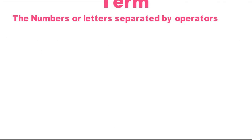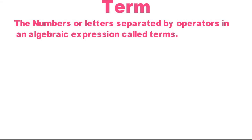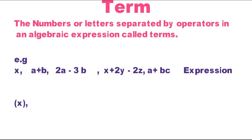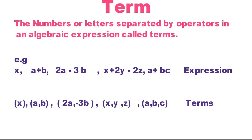The number or letter separated by operators in an algebraic expression is called a term. Numbers or letters that are separated in an algebraic expression are called terms. Whether you say algebraic operator, or just operator, or mathematical operator — whenever a number or letter is separated by an operator in an algebraic expression, it is called a term.